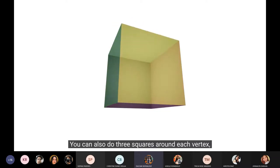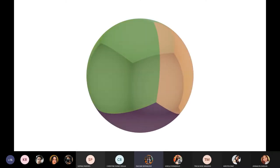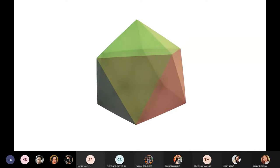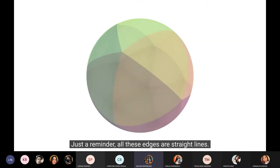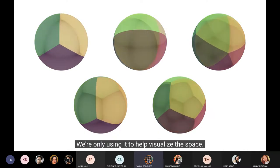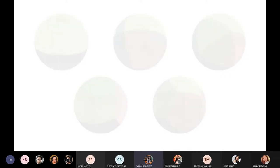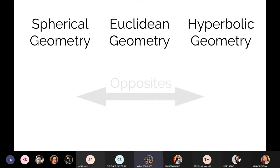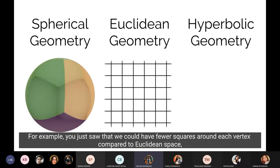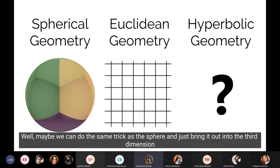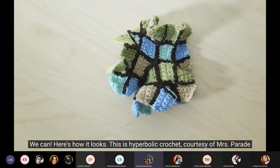You can also do three squares around each vertex. Three triangles. And just a reminder, all these edges are straight lines. Everything lives on that two-dimensional shell, and there's no third dimension to curve into. We're only using it to help visualize the space. So now let's move on to hyperbolic space. The theme you'll see for the rest of the video is that for everything weird about spherical geometry, the opposite is true in hyperbolic space.